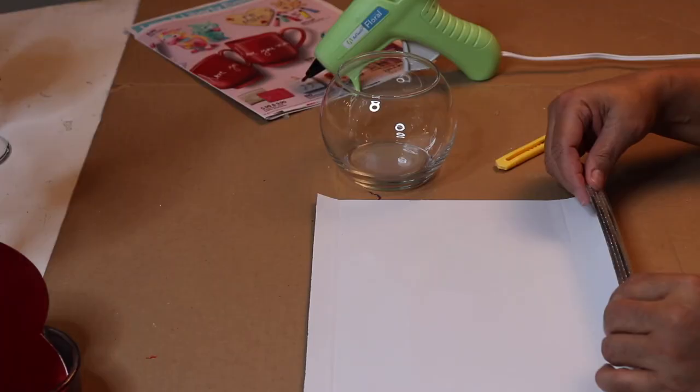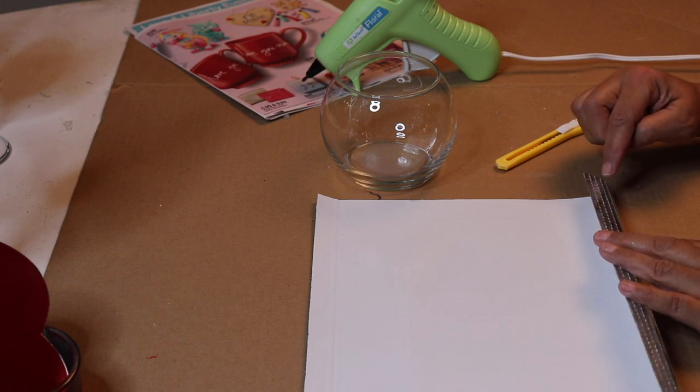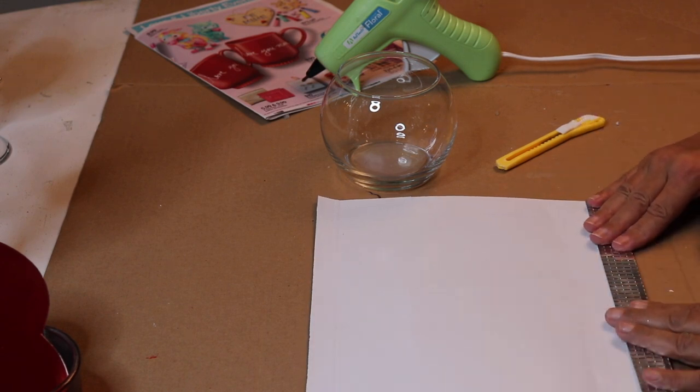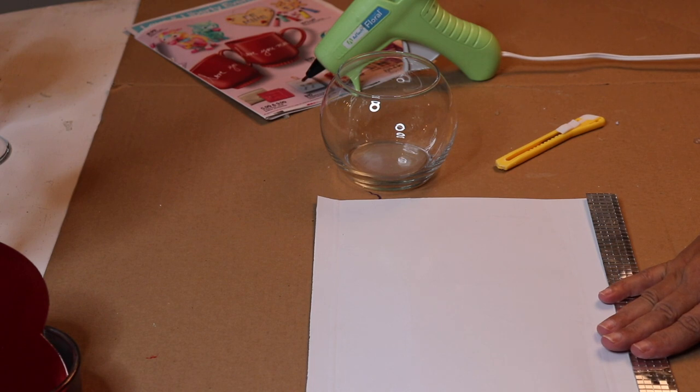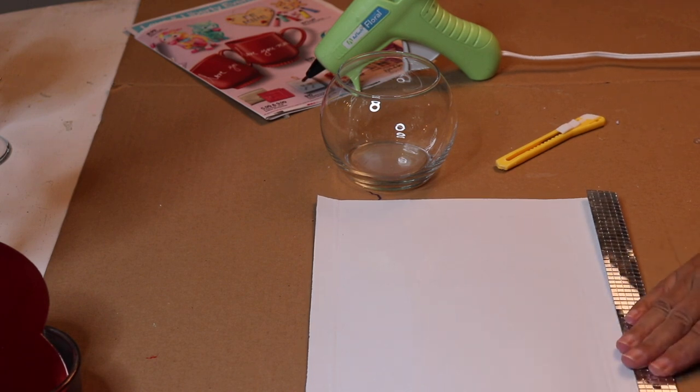I put my candle holders aside to dry, so now I'm going to take five rows of my mirror tile and attach it directly in the center of my fishbowl.